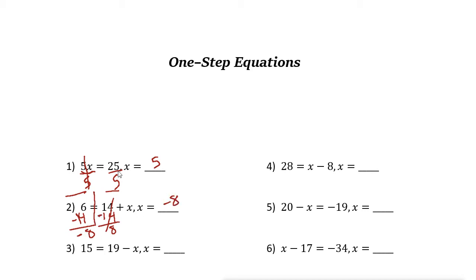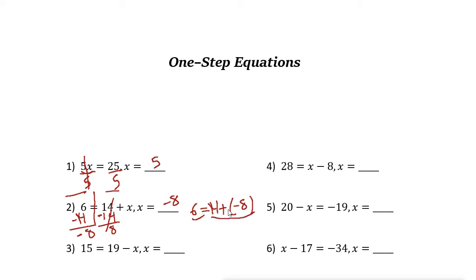We can check our answer: 6 = 14 + x, and x is negative 8. So 14 plus negative 8 is 14 minus 8, which is 6. That is correct — 6 equals 6.